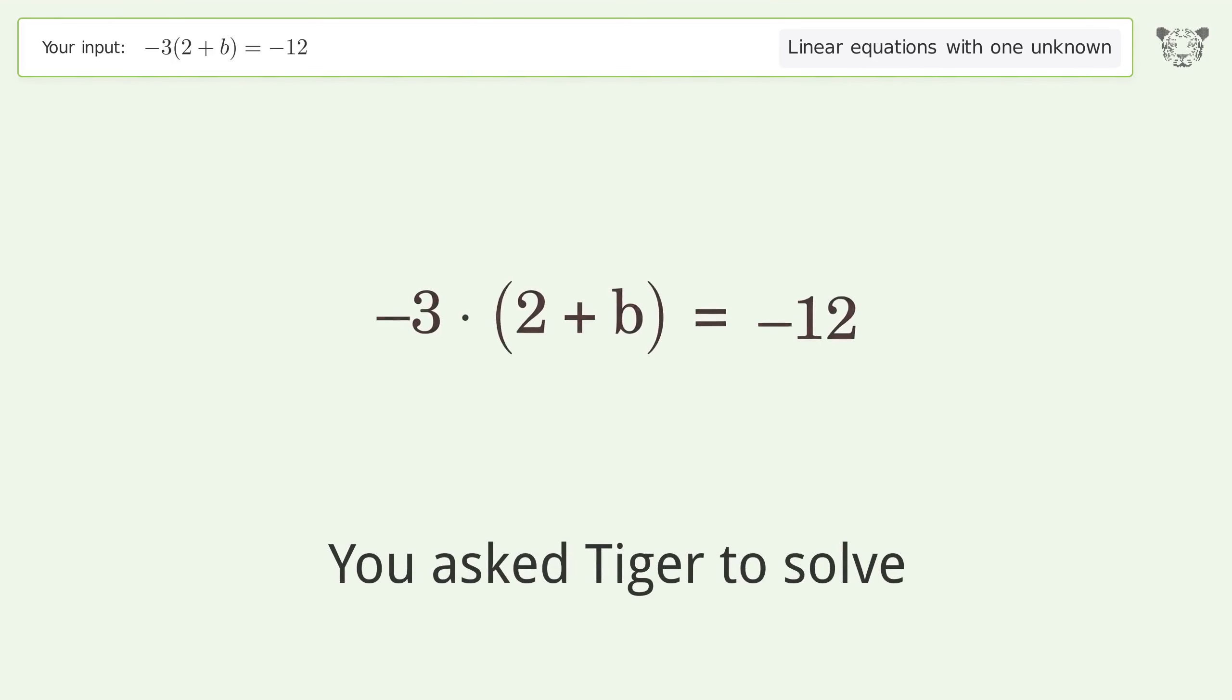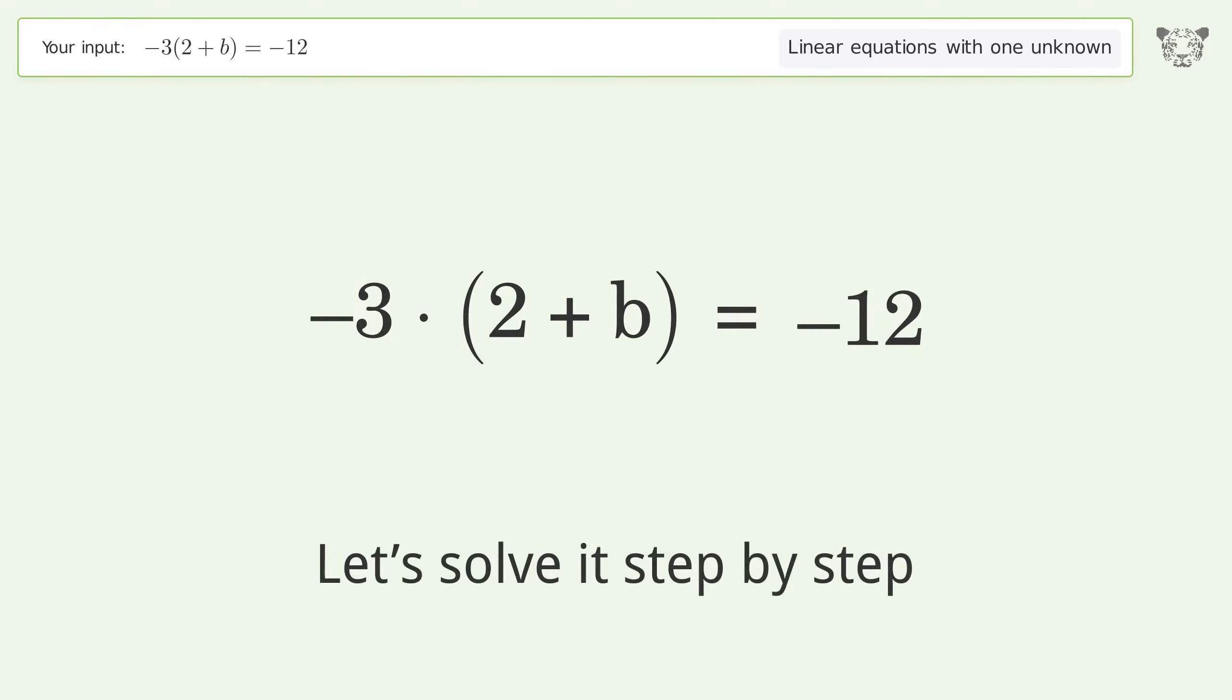You ask Tiger to solve this. This deals with linear equations with one unknown. The final result is b equals 2. Let's solve it step by step. Simplify the expression, expand the parentheses.